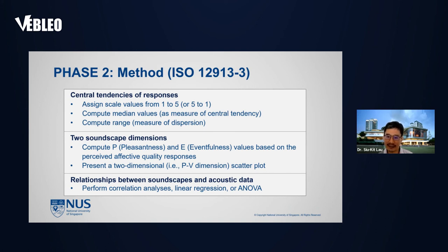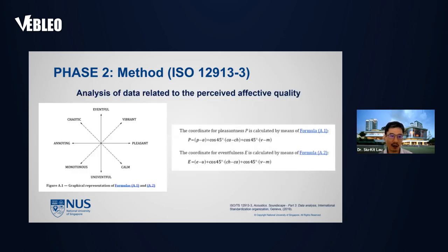Here is the questionnaire related to sound source identification given by the guideline. We ask participants to identify what sound sources they can hear in the area and how dominant they are. Here is the questionnaire related to perceived affective quality, which follows a set of response scales with attributes in the hearing domain. Another question asks a five-point ordinal category scale related to the appraisal of the surrounding sound environment. For each collected dataset, we analyze them by referring to the ISO international guidelines. With the perceived affective quality response, we compute pleasantness and eventfulness values and present them as a two-dimensional scatter plot.